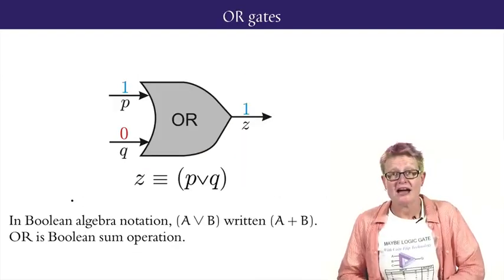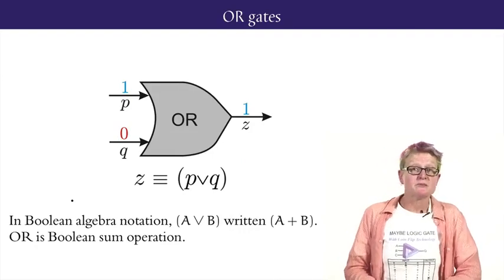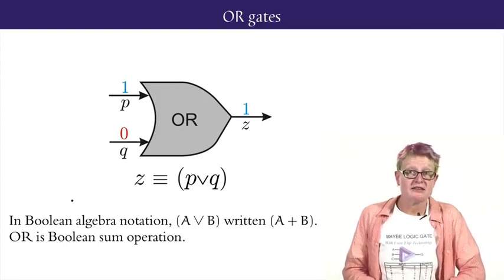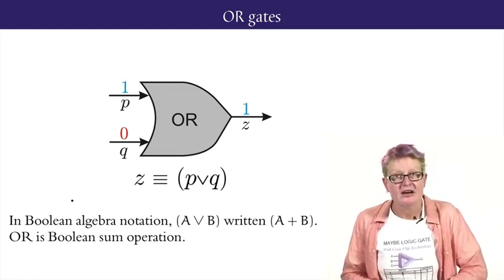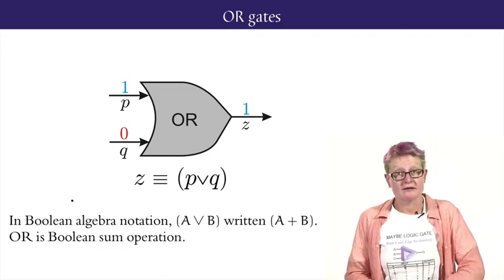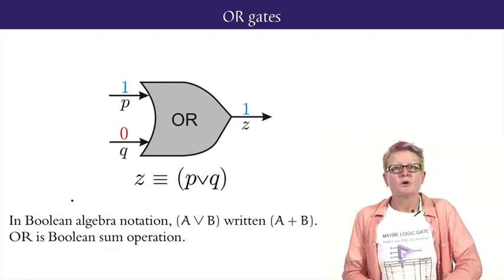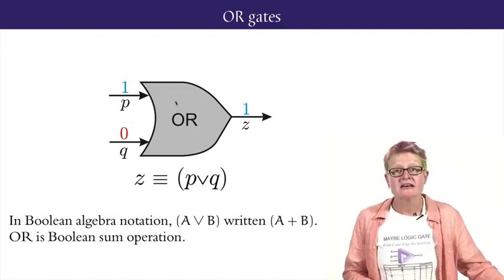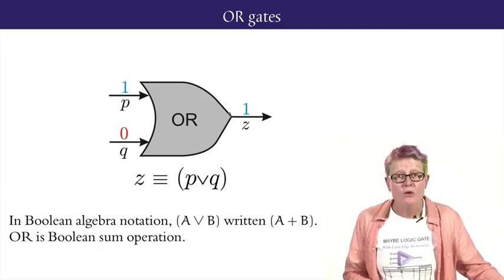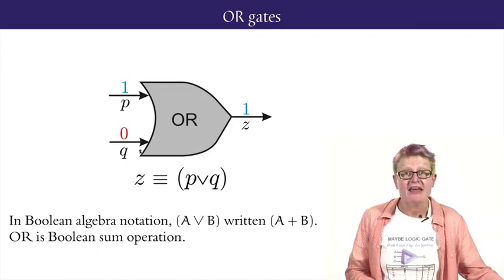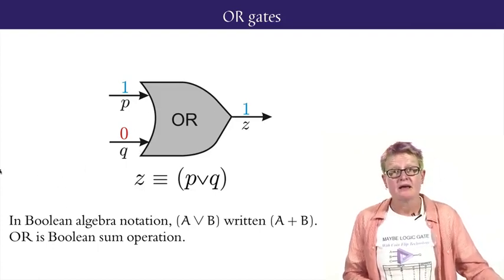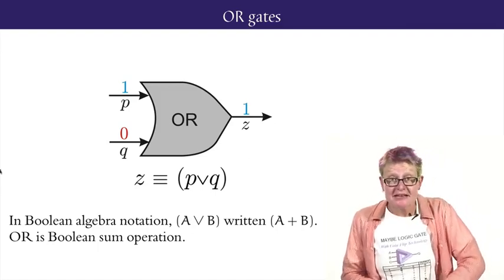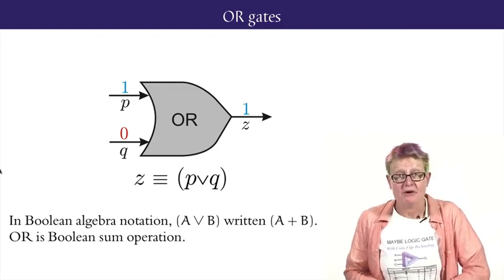Next, the OR gate. Starting with its simplest form, an OR gate is a two-input, one-output system such that the output is one if and only if one or more of the inputs is one. Again, we assume you know the truth table. The standard symbol for an OR gate is characterized by the pointy output end and the curved input side. In Boolean algebra notation, A OR B is written A plus B because OR is the Boolean sum operation.